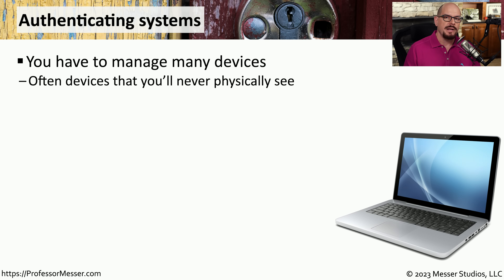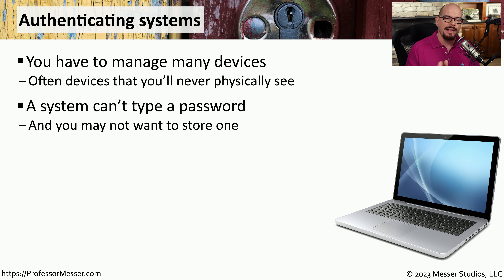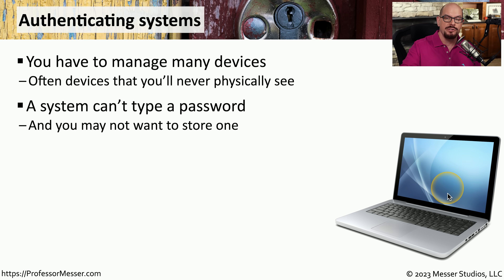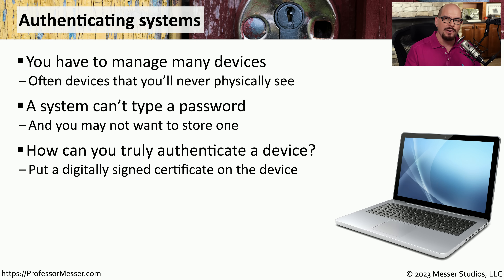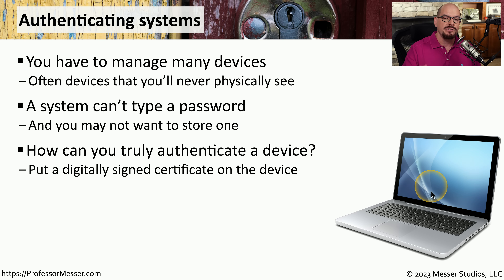As a security professional, you'll be responsible for managing the security on hundreds or perhaps even thousands of separate systems. And in many cases, you'll never have physical access or even be able to see where those systems might be, because they may be located anywhere in the world. The question becomes: how can we verify that a computer trying to connect to our network is a computer that's authorized to be on our network? This computer obviously can't type a password to prove who it might be, and you probably wouldn't want to store a password on one of your systems out in the field anyway. So how can we provide that additional authentication?